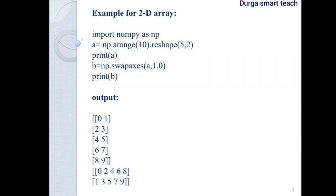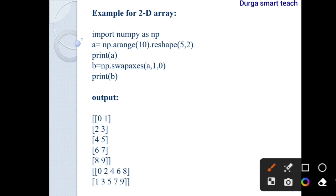For a two-dimensional array, there is no difference between transpose and swap axis. Transpose exchanges rows into columns and columns into rows. Swap axis for a 2D array also exchanges the two axes — rows and columns — so the result is the same. That's why there is no difference between swap axis and transpose for two-dimensional arrays.